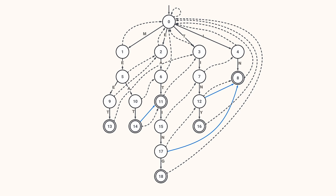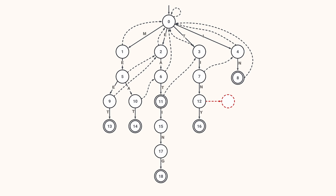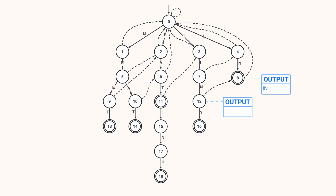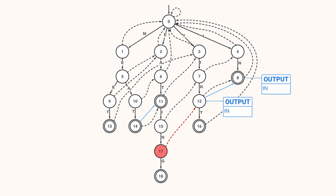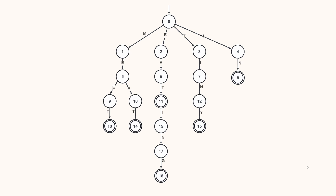When computing suffix links, if the target state has a non-empty output property, we copy its content to the current node's output property — that creates the output link. For example, the suffix link of state 12 leads to state 8, whose output property is non-empty, so we copy it to state 12. Then for state 17, its suffix link leads to state 12, which has a non-empty output, so we copy and state 17 gets an output link pointing to state 8. That's everything needed to build the Aho-Corasick state machine.